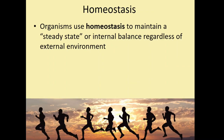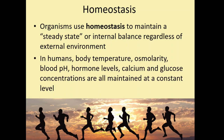Organisms use homeostasis to maintain a steady state or internal balance regardless of the external environment. In the last session we looked at osmoregulation, which is where animals regulate their water and solute concentrations of their fluids and cells. But homeostasis also incorporates a lot of other aspects. In humans, body temperature, osmolarity, blood pH, hormone levels, calcium, and glucose concentrations are all examples of things maintained at a constant level or within an optimal range. It's really important for organisms to maintain these aspects within a tolerable range to keep their bodies functioning properly.